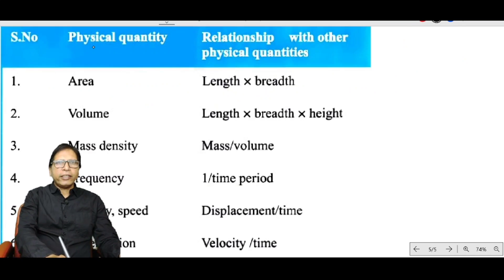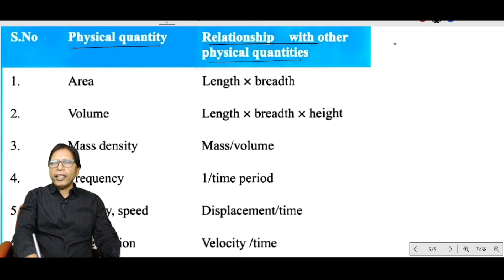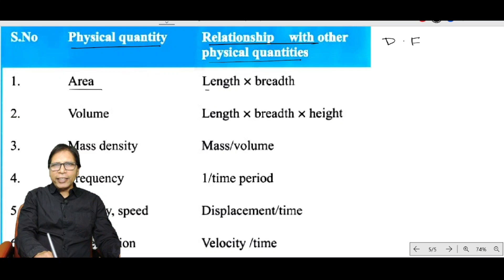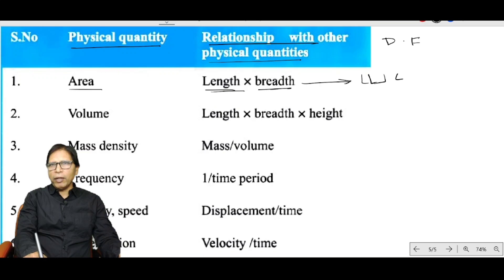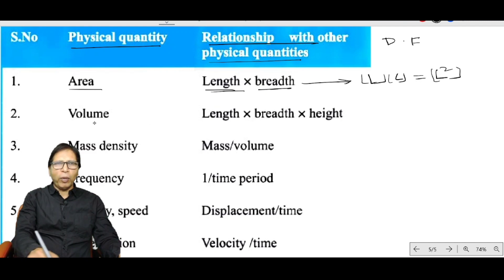We will express the dimensional formula of different physical quantities. Each entry shows the physical quantity, its relationship with other quantities, and its dimensional formula. Area equals length × length (length × breadth), so the dimension of length is L, and the dimension of area is L².